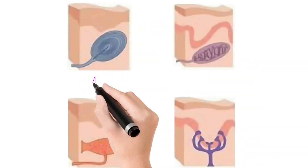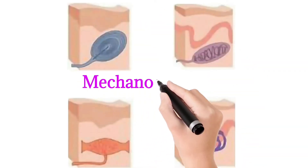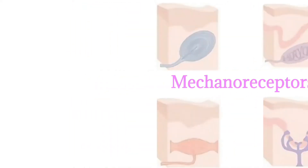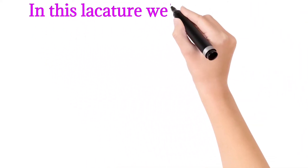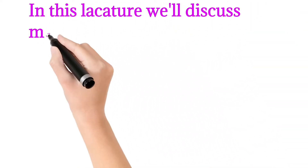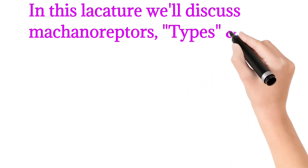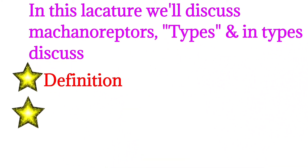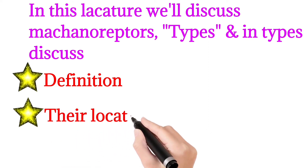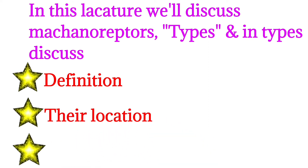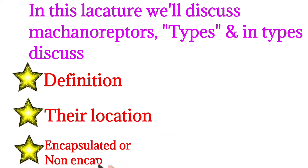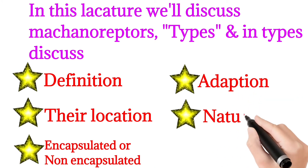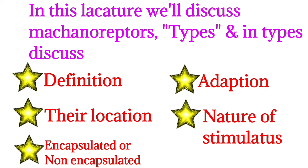Bismillah ar-Rahman ar-Rahim. Today we will discuss about mechanoreceptors, and in mechanoreceptors we will discuss about its types, and in types we will discuss about definition, their location, encapsulated or non-encapsulated, adaptation, and their nature of stimulation.